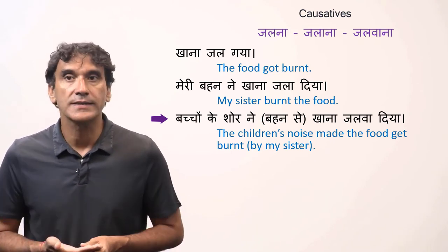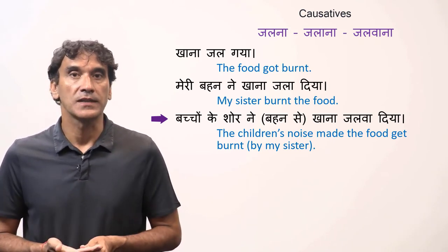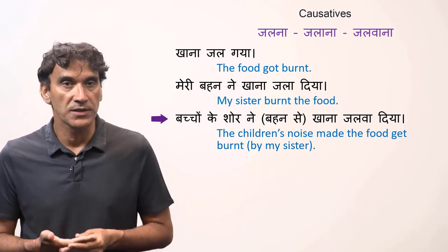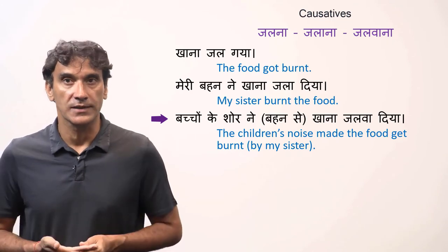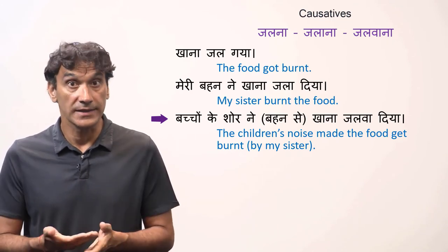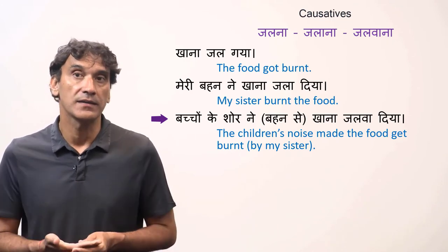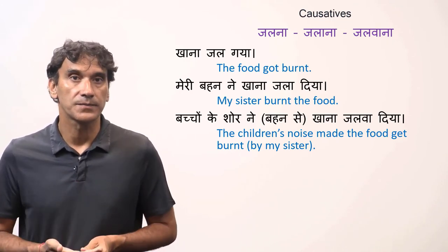Usually in the second causative, the agent is not mentioned. It is understood from the context. In this case, it is behen — sister.